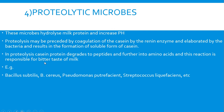The proteolysis of casein degrades peptides further into amino acids, which are responsible for alkaline reaction and bitter taste of milk. Examples of proteolytic microbes include Bacillus subtilis, Bacillus cereus, Pseudomonas putrefaciens, Streptococcus liquefaciens, and others.